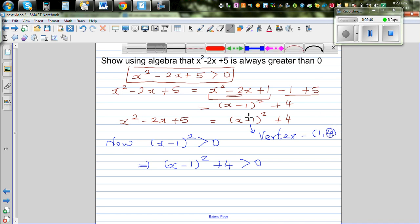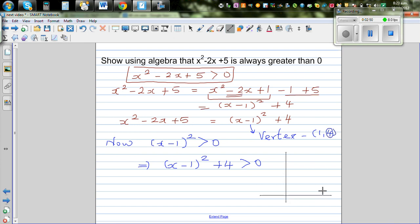So if you graph this, a sketch of it would look like this. We know the y-intercept is going to be 5, and this point is (1, 4).